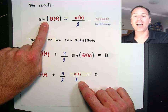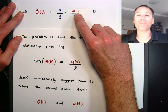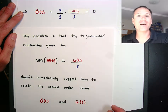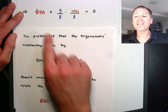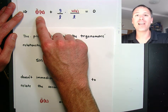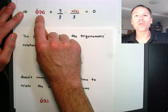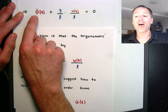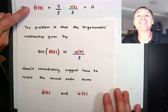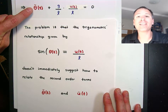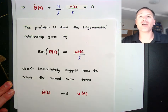This trigonometric relationship immediately suggests that we can replace the nonlinear term sine of theta of t with a linear term u of t divided by L. That's equivalent to sine of theta of t. This linearization — this projection down onto the horizontal axis — solves one of our problems, which is getting rid of the sine term. But the issue is it's not immediately clear that we can say anything intelligent about the second derivative of theta and how that relates to the second derivative of u.